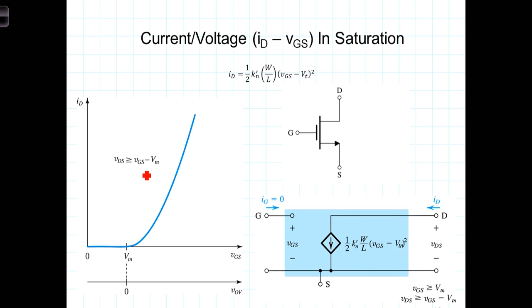or in other words, in saturation. You'll notice that for VGS less than the threshold voltage, no current flows through it. But as VGS continues to increase, the current itself then increases at a much more rapid rate.